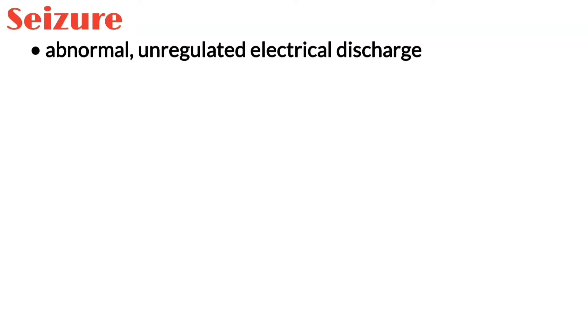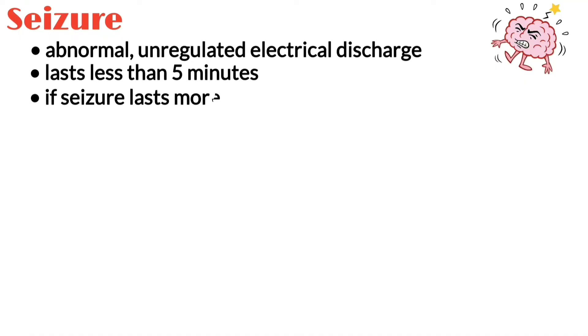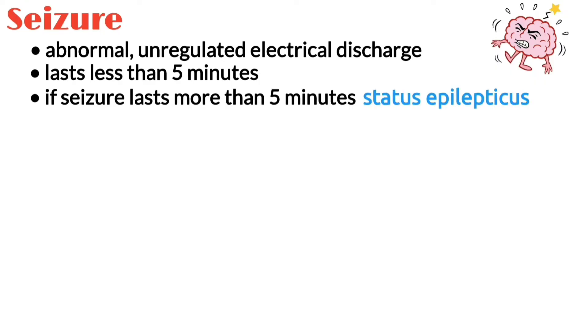A seizure is an abnormal, unregulated electrical discharge from neurons in the brain and usually lasts less than 5 minutes. If a seizure lasts more than 5 minutes, it's called status epilepticus.